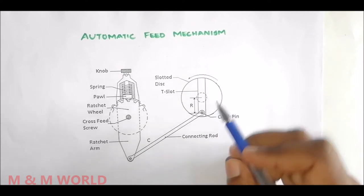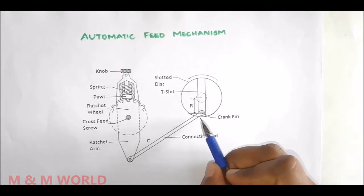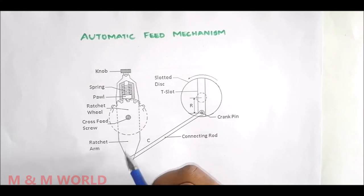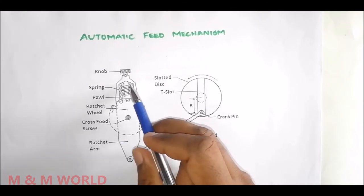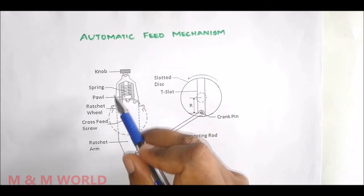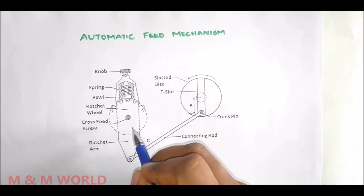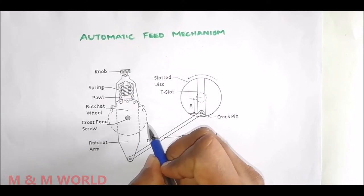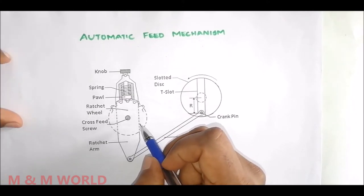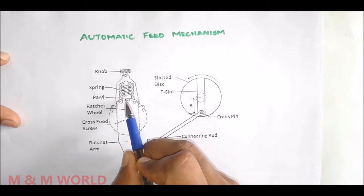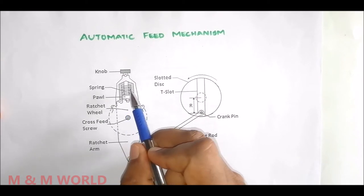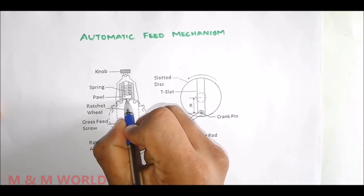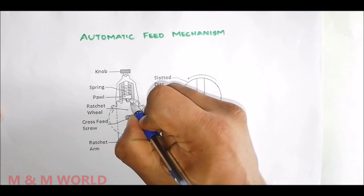There is a connecting rod connected at one end with the help of a crank pin, and the other end is connected to a ratchet arm, also called a rocker arm. This is the ratchet wheel. On top we can see a spring-loaded pawl, where one end is straight and the other end is slanted.